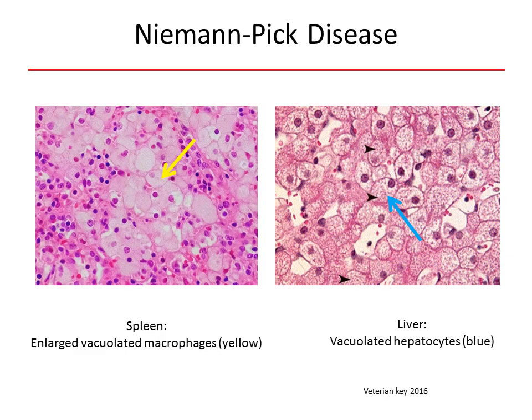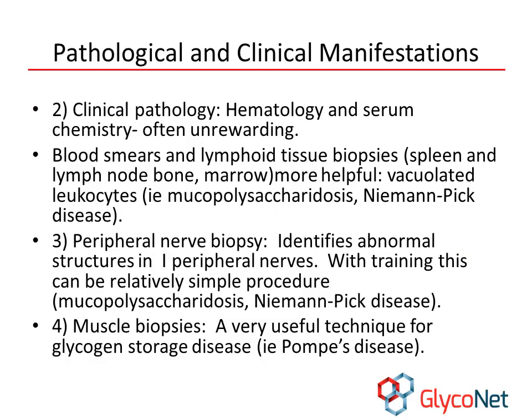The images represent histomicrographs of the liver and spleen of a cat with Niemann-Pick disease. The splenocytes and hepatocytes have prominent intracellular inclusions that cause the cells to swell, leading to cellular dysfunction and subsequent tissue failure. Other ancillary tests can be employed to assist veterinarians in the diagnosis of lysosomal storage diseases.